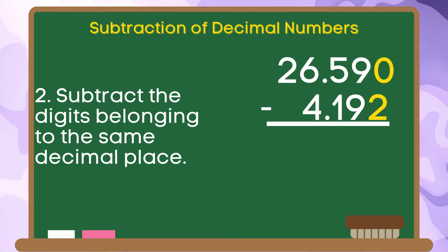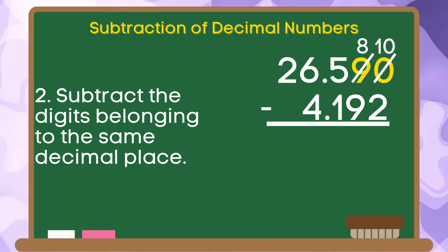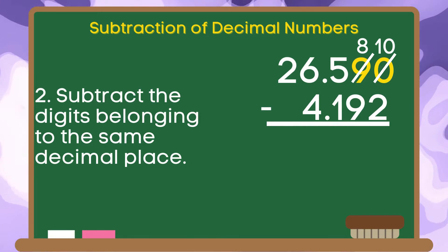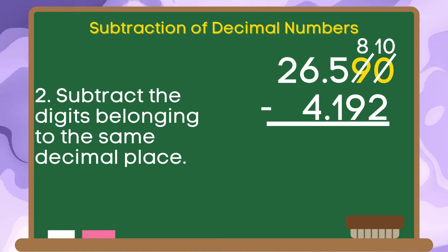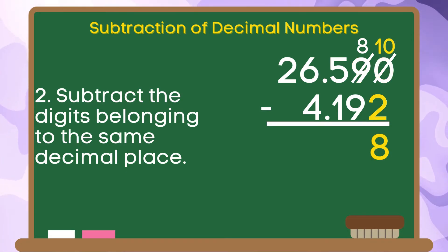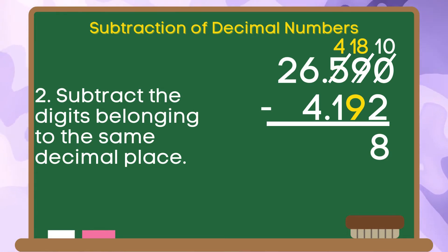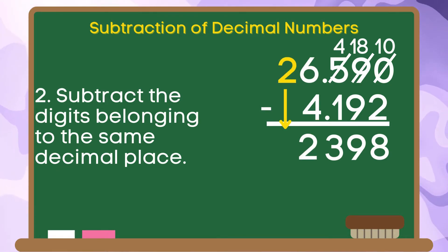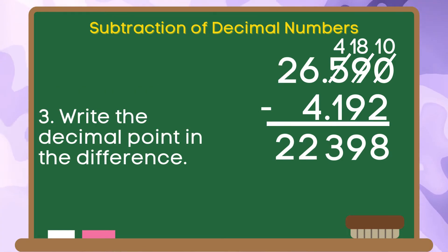0 minus 2 cannot be done. We are going to borrow 1 from 9. 9 will become 8 and 0 will become 10. 10 minus 2 is 8. 8 minus 9 cannot be done. We are going to borrow 1 from 5. 5 will become 4 and 8 will become 18. 18 minus 9 is equal to 9. 4 minus 1 is equal to 3. 6 minus 4 is equal to 2. We are going to bring down 2. For the last step, we are going to write the decimal point in the difference.